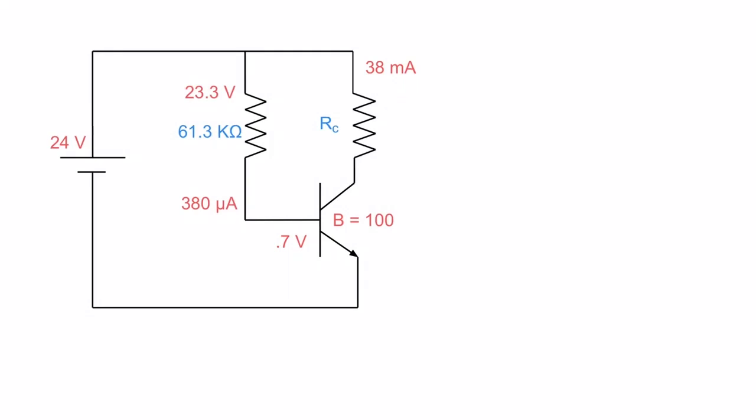Now that we have the current on the collector side, we're getting closer to the end. We need to figure out what the volt drop will be across the collector resistor. Well, in order for us to do that, we need to have a resistance because we have a current, we need to take the current times the resistance, again, using Ohm's law to figure out what the volt drop is across this resistor. So let's try that out. We are going to give it the value 500 ohms. So I've got 38 milliamps running across a 500 ohm resistor that gives me a voltage of 19 volts.